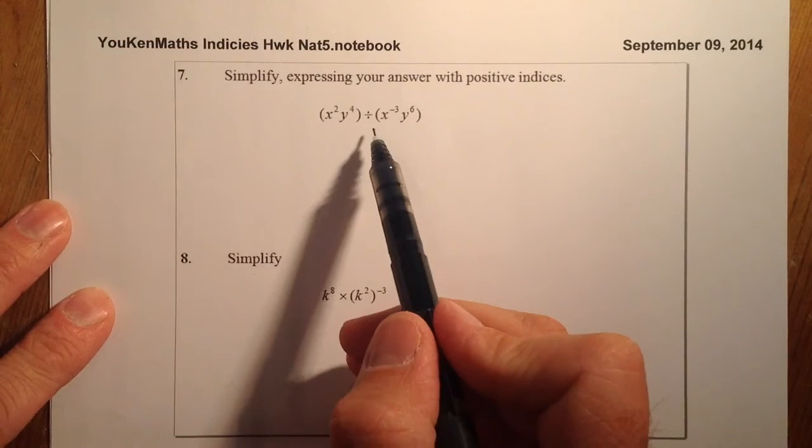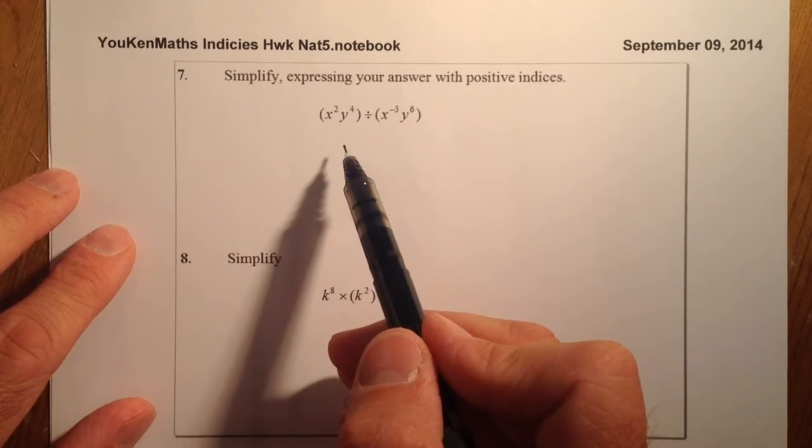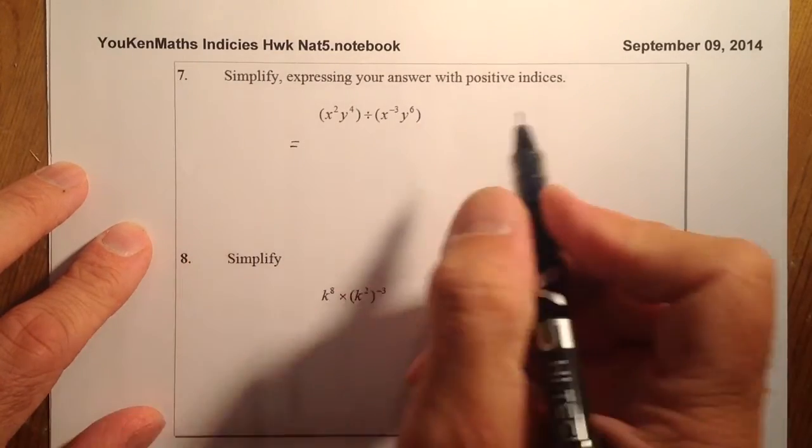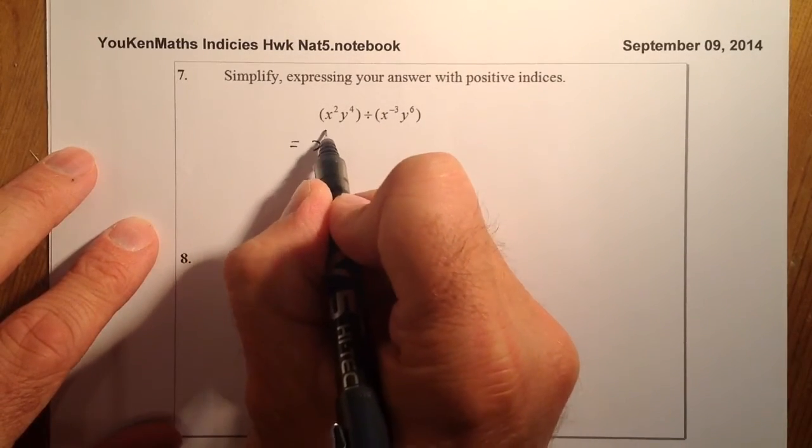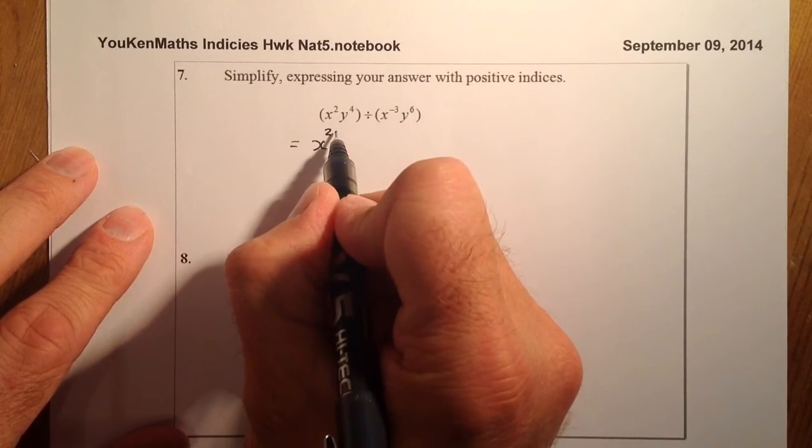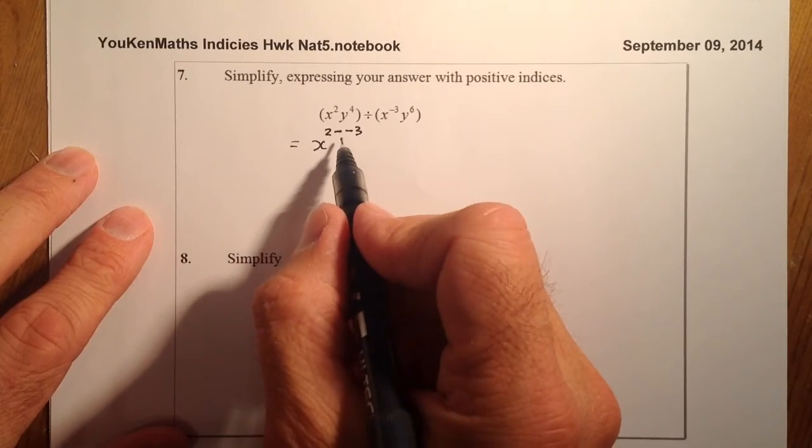I'm going to be dividing. When I divide, I subtract the indices. I'll go straight for x to the power of 2. I'm dividing by x to the minus 3, so that's going to be take away, and remember it's minus 3. So that's 2 minus minus 3.